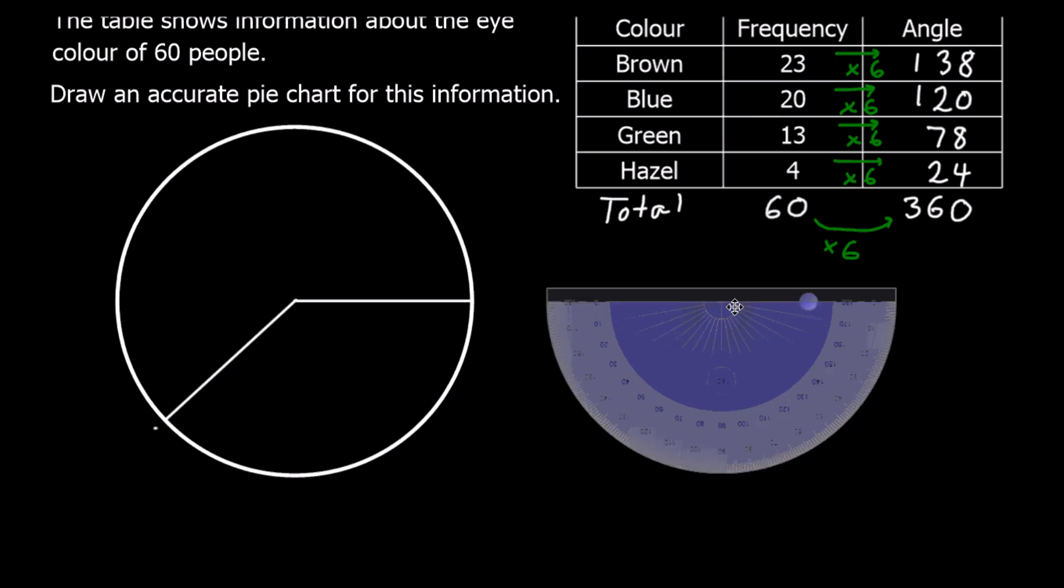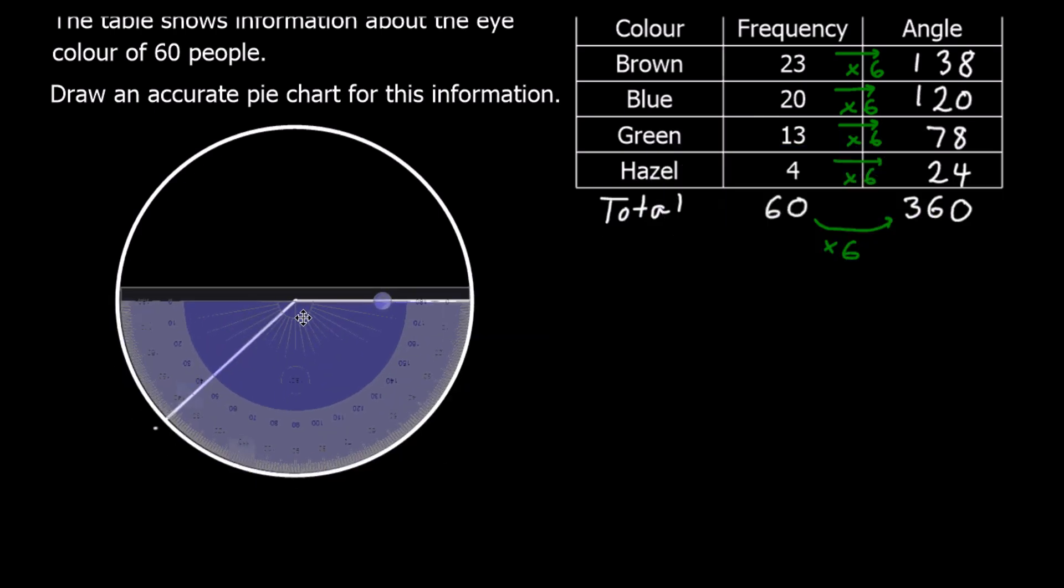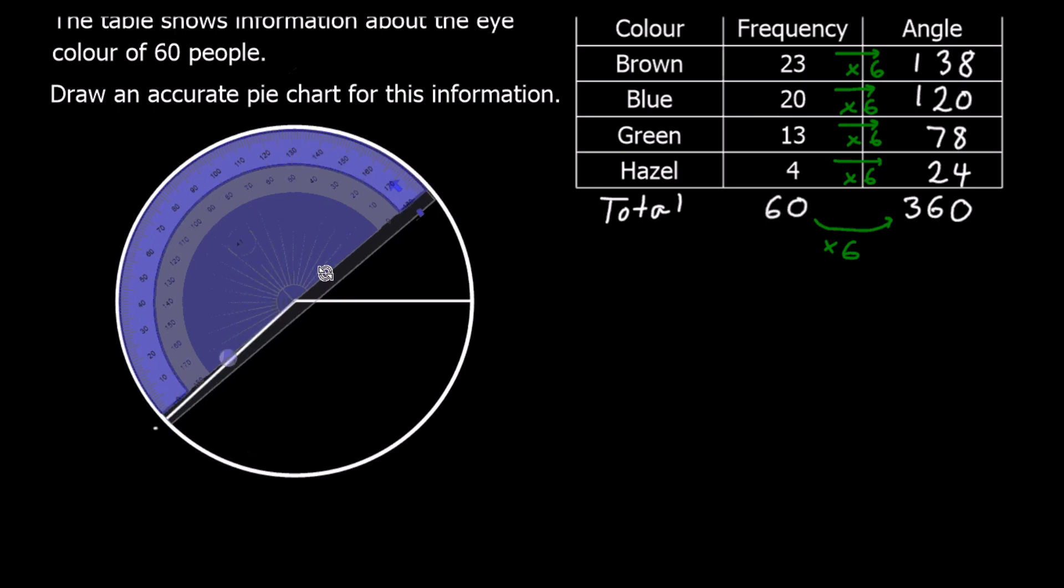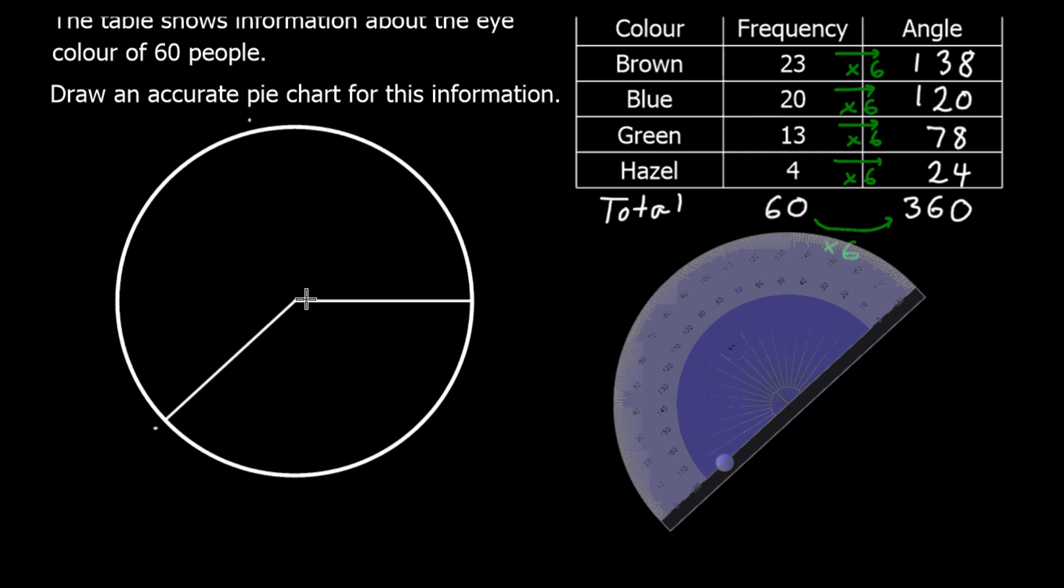We're going to do the same thing again for blue, 120 degrees. So the centre of the protractor in the centre of the circle. Line up 0 with the line we've just drawn, and we're going to go round 120 degrees this time. And get the ruler and join with the straight line.